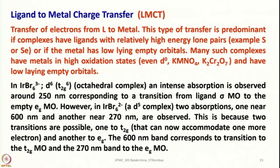The 600 nm band corresponds to the transition to the T2G molecular orbital, and the 270 nm band corresponds to the transition to the EG molecular orbital. So the electronic configuration can tell you about the possible transitions.